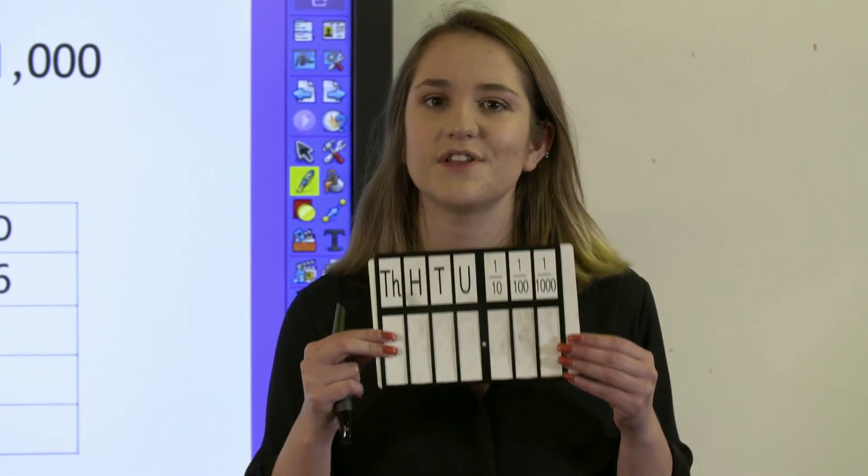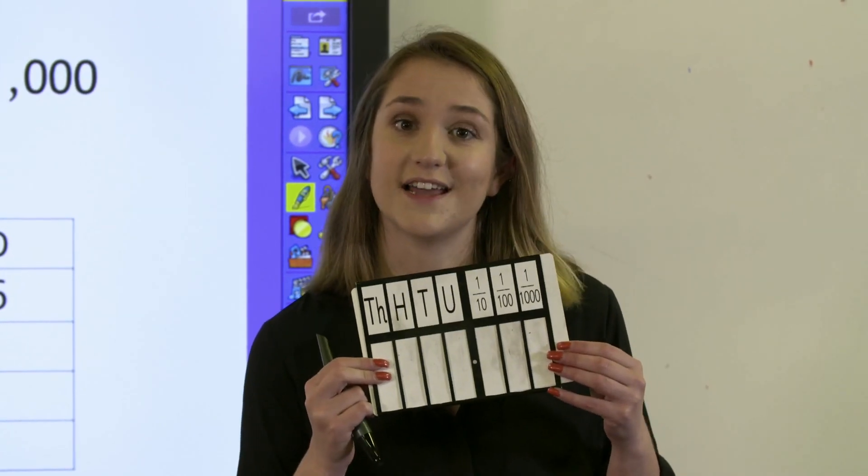It's really important that your pupils have an understanding of why what they do works, and this comes from having a really deep conceptual understanding. One way to support them with learning about multiplying by 10, 100 and 1,000 is to use a place value slider.